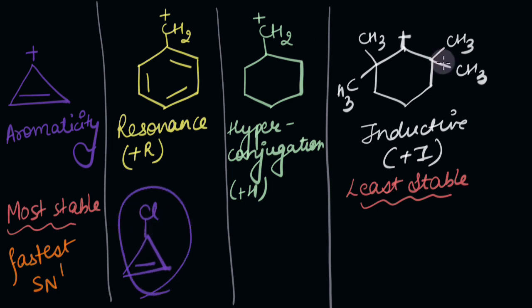Now that we have recalled how different electronic factors help us stabilize the carbocation and how it affects the rate of an SN1 mechanism, in the next video, we'll be talking about why and how do we rearrange a carbocation.